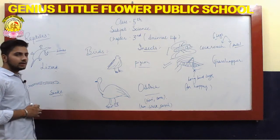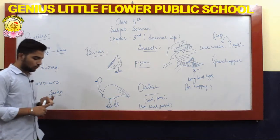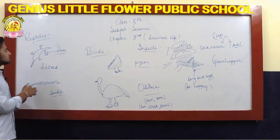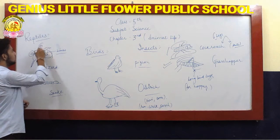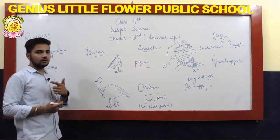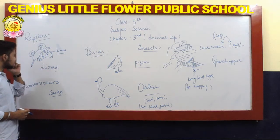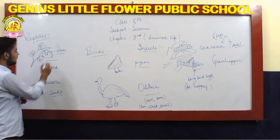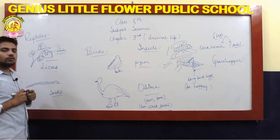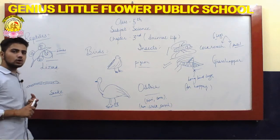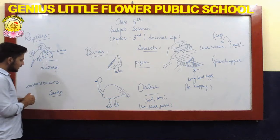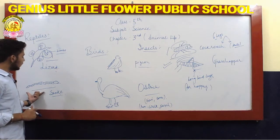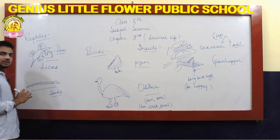Now let's consider reptiles. Most reptiles — like lizards, crocodiles, and turtles — have limbs for motion, but they still crawl on the ground, which is why they are called reptiles. Some reptiles, however, do not have limbs at all — for example, snakes, which are also a species of reptile.